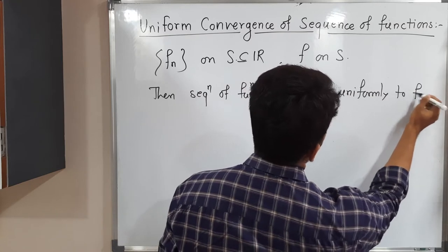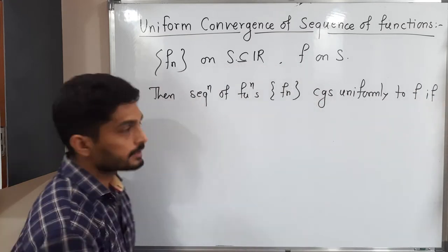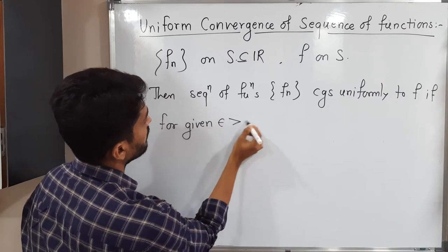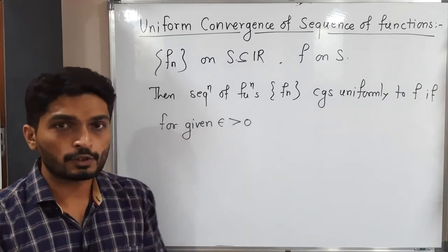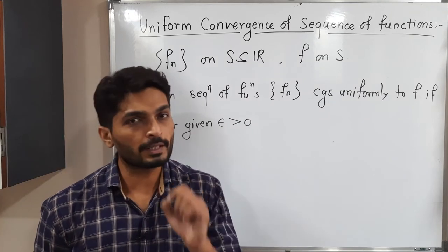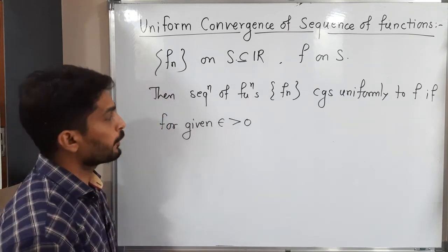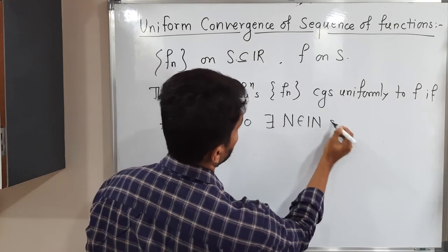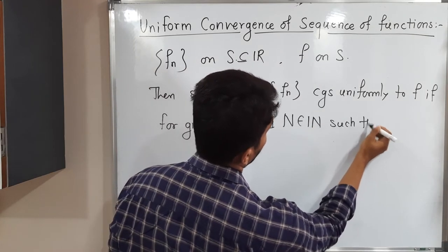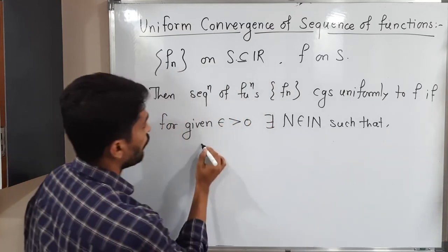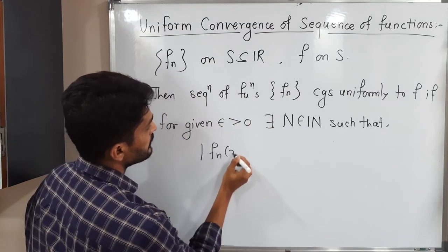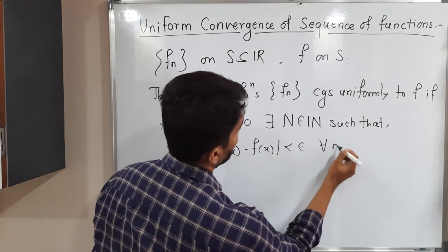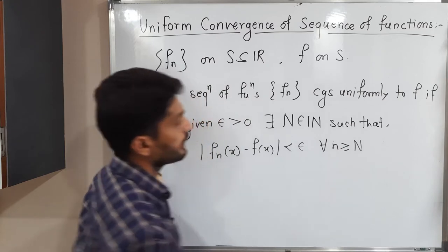to f if the definition is: for given epsilon greater than zero, for given epsilon greater than zero, it is same as the definition of point-wise convergence with a very small difference. There exists N belongs to the set of natural numbers such that mod fn of x minus f of x less than epsilon for all n greater than or equal to capital N.